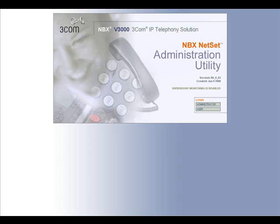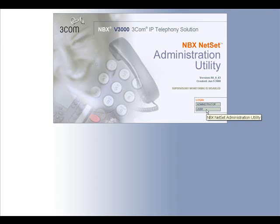The IP address can be given to you by the system administrator. Just enter the IP address into your web browser and it will take you to the login screen, located here. Your username will be your extension number, and your password is the password you generated when you set up your voicemail account. If you have not yet set up your voicemail account, please see the tutorial on setting up your voicemail before continuing on.